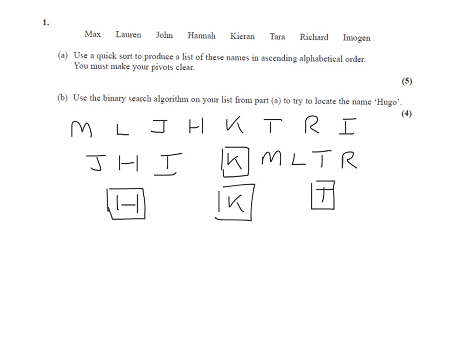Now let's go through these two sub-lists. J is after H, and I is after H. Now in the second sub-list, M is before T, L is before T, and R is before T.